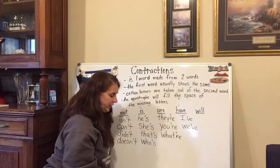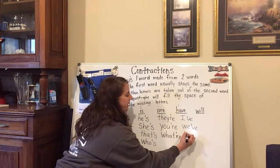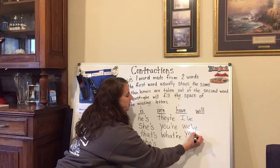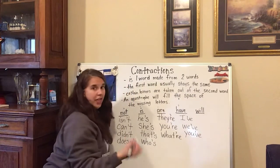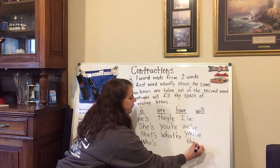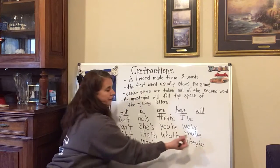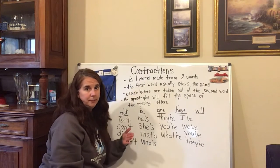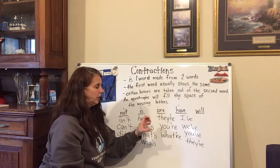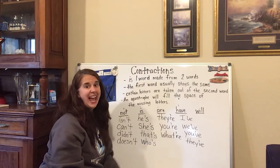So we have 'I've,' 'we've,' and 'you have' makes 'you've.' Again, the first word stays the same. It's the second word where the apostrophe is taking the place of H and A in 'have.'